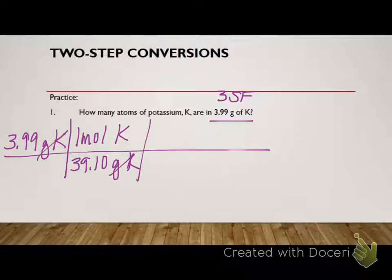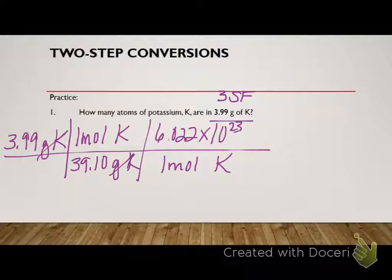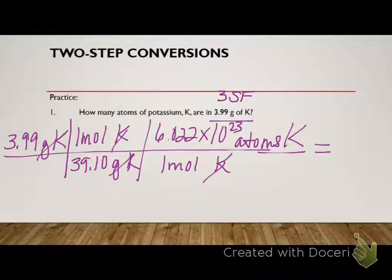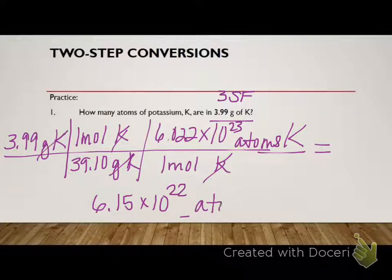So I got rid of my grams. Now that I'm in moles, I can go moles to atoms, since we're dealing with an element. So 1 mole of potassium is equal to 6.022 times 10 to the 23rd atoms. So my units cancel out. So I do that math, and what do I get?